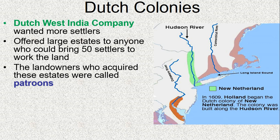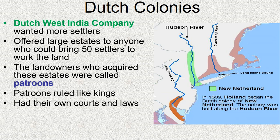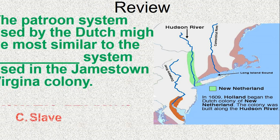The patroon system was a way to encourage people to come settle the land. These patroonships were given to individual wealthy people who had money to pay for others to come over, just like the headright system. They basically controlled that labor force and that land, ruling like kings with their own courts, their own laws — their own little kingdom in New Amsterdam. They also owned a share of the crops produced on that land.